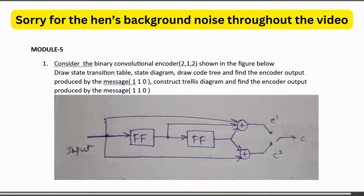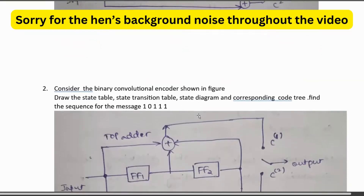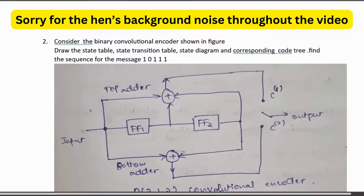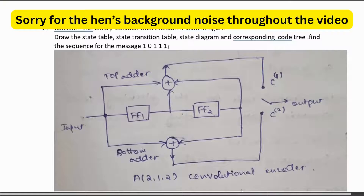In Module 5, a binary convolutional encoder (2,1,2) is given with one input and two flip-flops. From the given diagram, find the state transition table, state diagram, code tree, and encoder output for the message 1,1,0. Also construct the trellis diagram. A similar problem is given with a different figure and message sequence — calculate the state table, transition table, state diagram, and code tree, and find the encoder output sequence for the message 1,0,1,1,1.